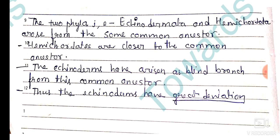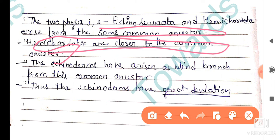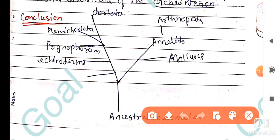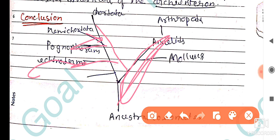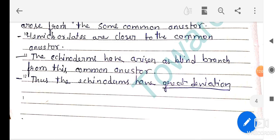In conclusion, the two phyla — Echinodermata and Hemichordata — arose from some common ancestor. Hemichordates are closer to the common ancestor, while echinoderms have arisen as a blind branch from that common ancestor, making echinoderms a great deviation. This can be seen in the phylogenetic tree: hemichordates represent the main line, and echinoderms represent a blind branch of invertebrates.